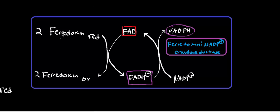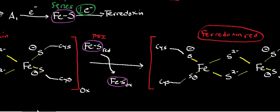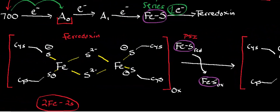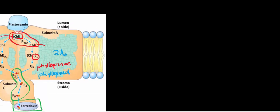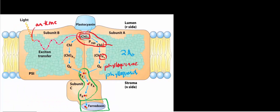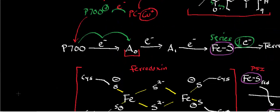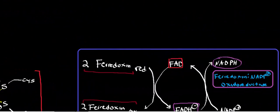In each case, when ferredoxin transfers an electron to the flavin, it returns to the oxidized state. In total, two ferredoxins in the reduced state are used, generating two ferredoxins in the oxidized state. Once ferredoxin returns to the oxidized state, it can pick up another electron from the iron-sulfur center of photosystem I. In the next video, we'll go into more detail on ferredoxin NADP+ oxidoreductase.